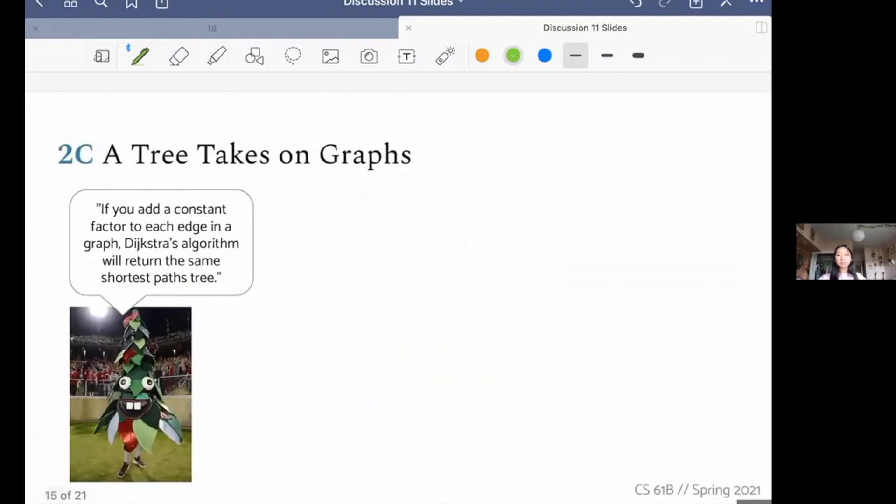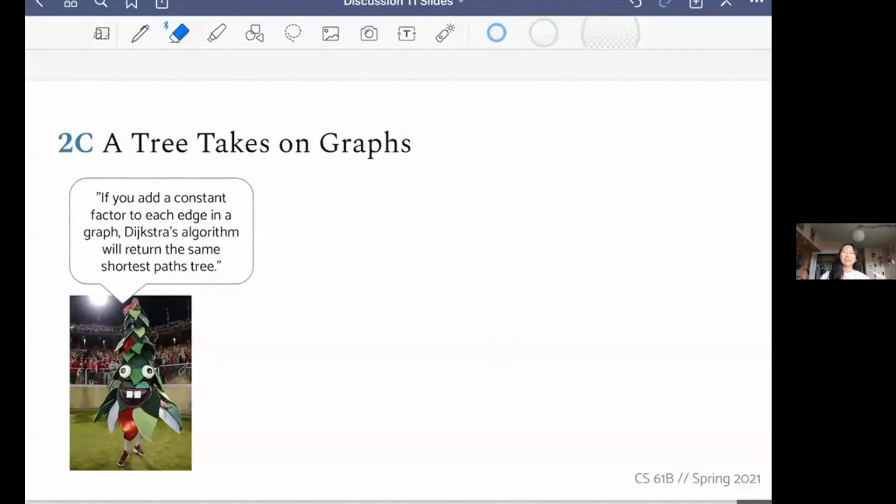Finally, we're going to move on to problem 2C. The last very misguided statement your friend at Stanford made was that if you add a constant factor to each end of the graph, Dijkstra's algorithm will return the same shortest paths tree. So what they're saying is that, let's say before, Dijkstra's given some graph says, oh, these are all the shortest paths from the start to every other node. And your friend is saying you could add a constant to every single edge. And Dijkstra's would give the same exact answer as before you had added those constants.